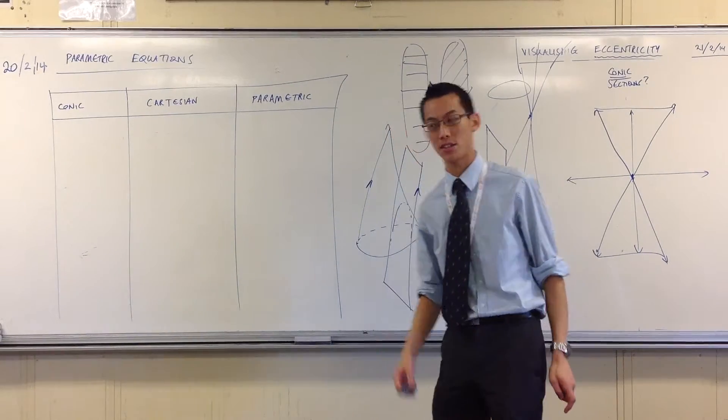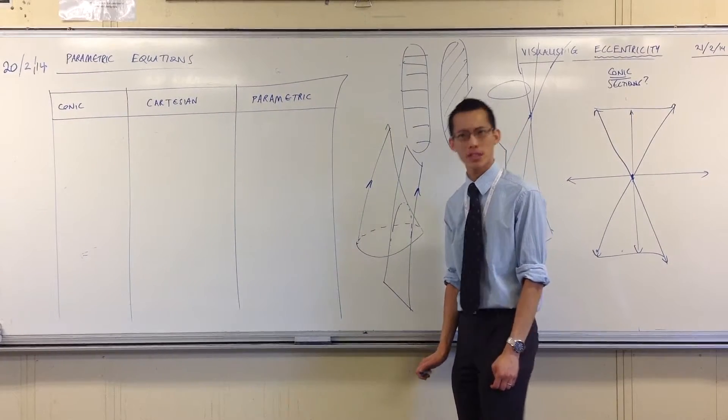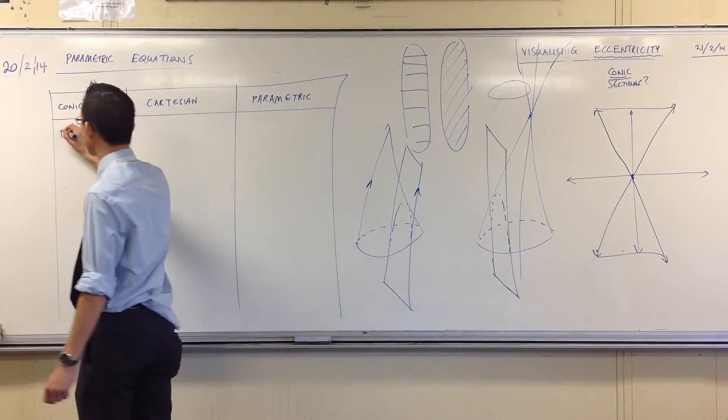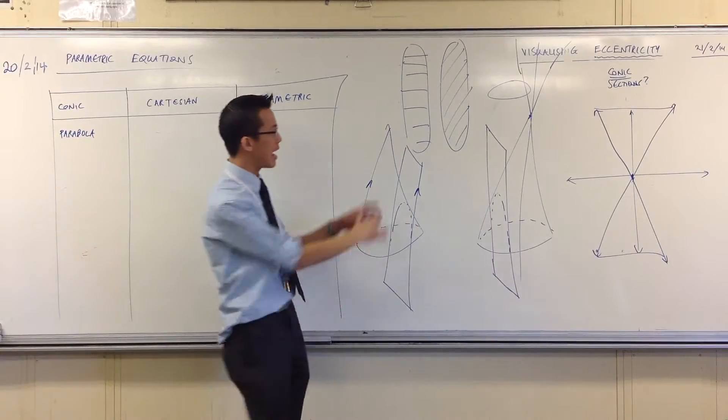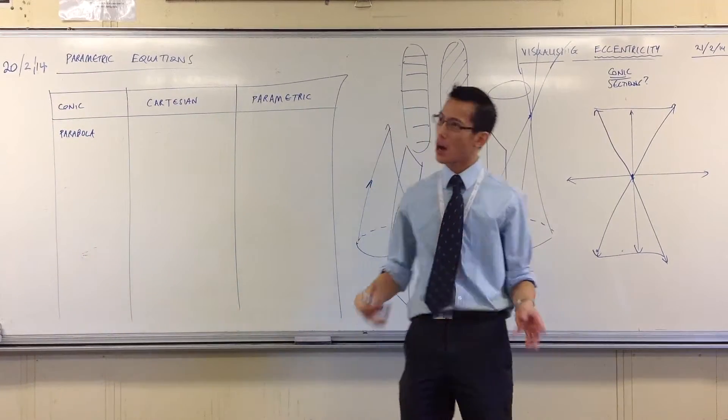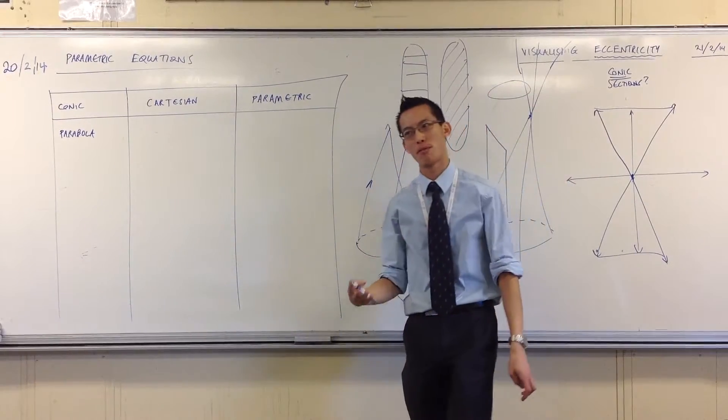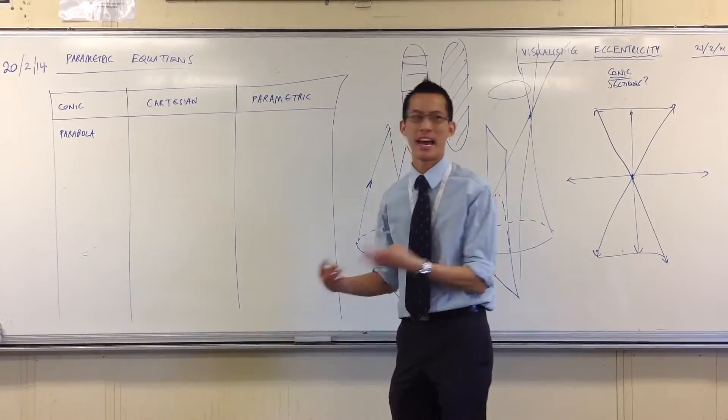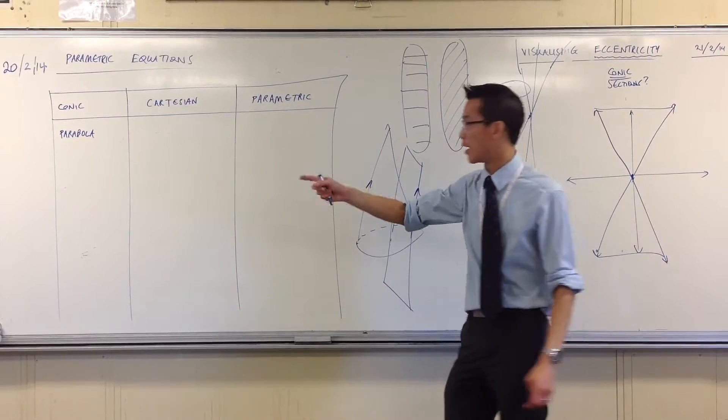Just like before when we started this topic, which conic section did we begin with? We started with the parabola. And the reason why is because it was a nice easy case to think about, even though now that you know all of this stuff, you might think it's more logical to start with the circle because that's like your basic case. But you can see it sort of breaks down mathematically because it doesn't have the ratio of the eccentricity that we're talking about. That's why we started with the parabola.